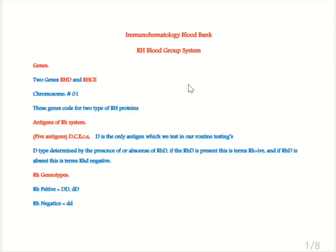Dear viewers, welcome back to another video from blood bank section. Today we will discuss the RH blood group system for medical laboratory examination purposes. There are two genes, RHD and RHCE, which both are present on chromosome number 1. These two genes code for different RH proteins.